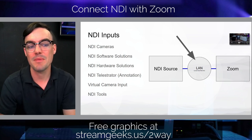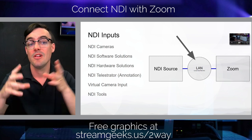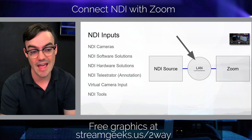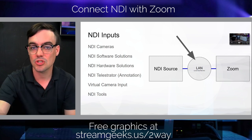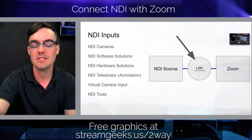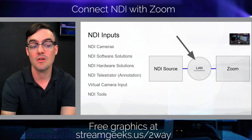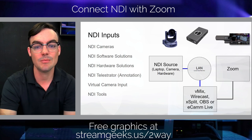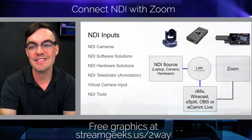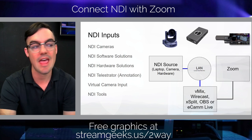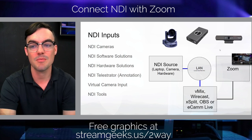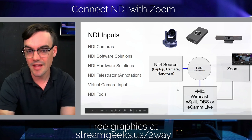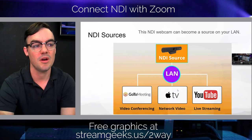Some of the inputs you can bring into Zoom make your presentation capabilities more powerful. They could be cameras or software — vMix, Wirecast, or XSplit running on one machine and also on a laptop, which is what we're going to show today. You could also have hardware solutions such as capture cards, NDI cameras, NDI converters, and a Telestrator — which we'll show today. You can do virtual camera inputs too. I'm showing a PTZOptics NDI camera, a Magewell HDMI or SDI to NDI converter, and the new NDI webcam from Huddlecam.